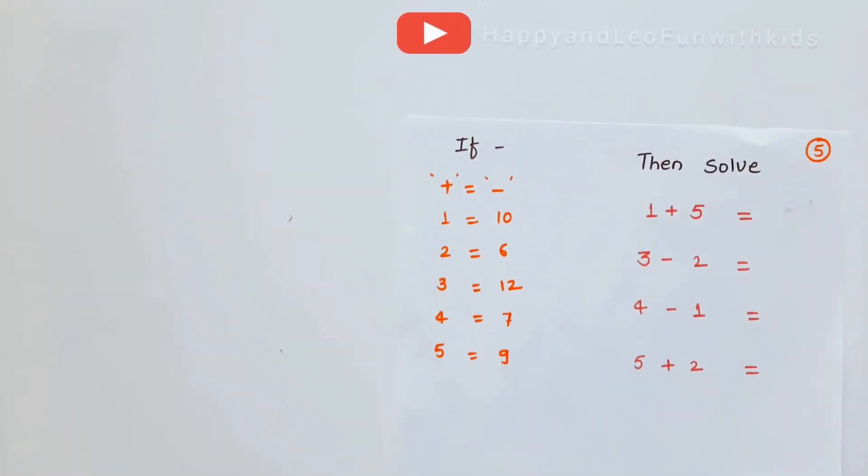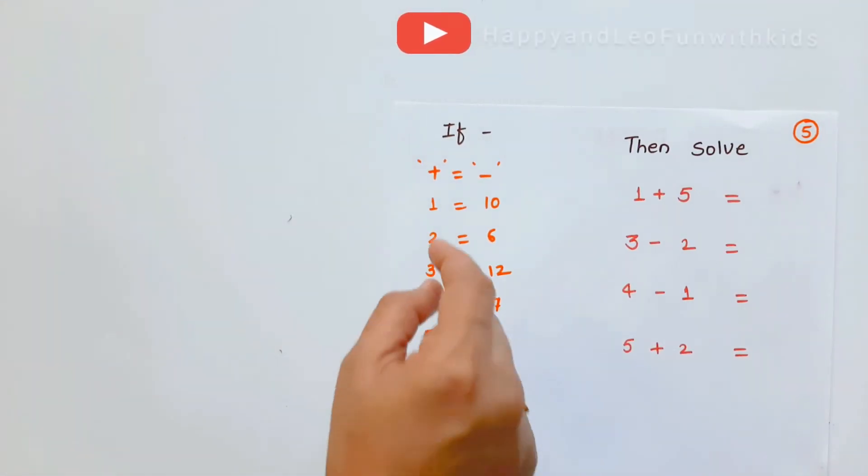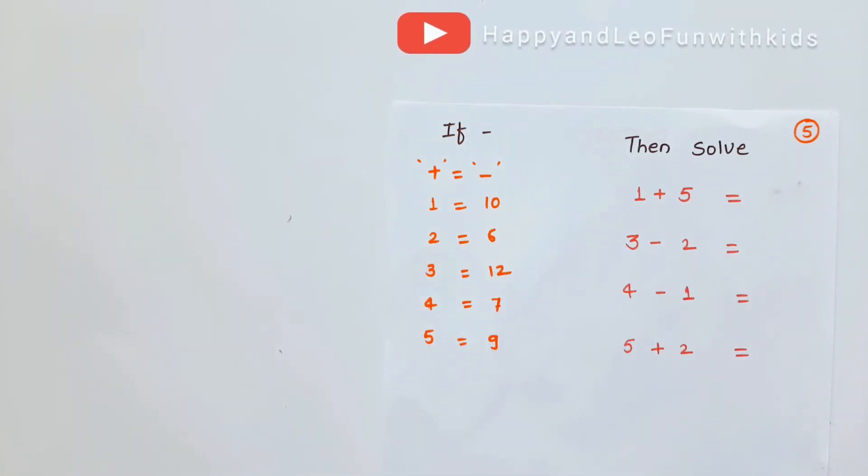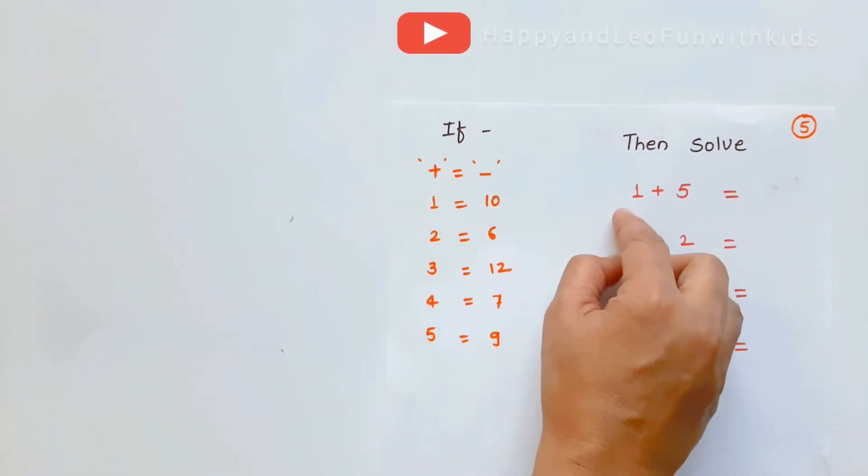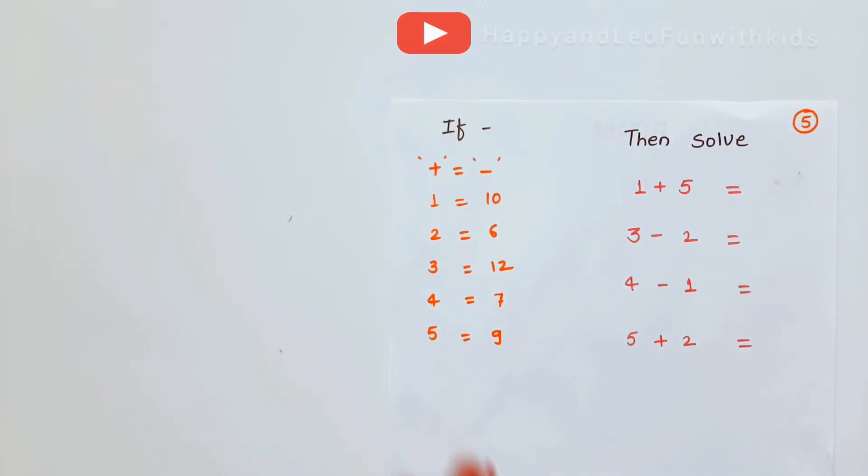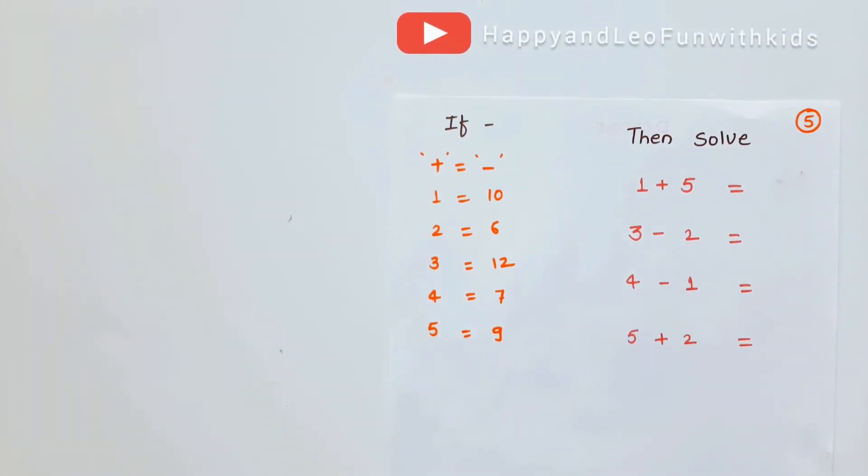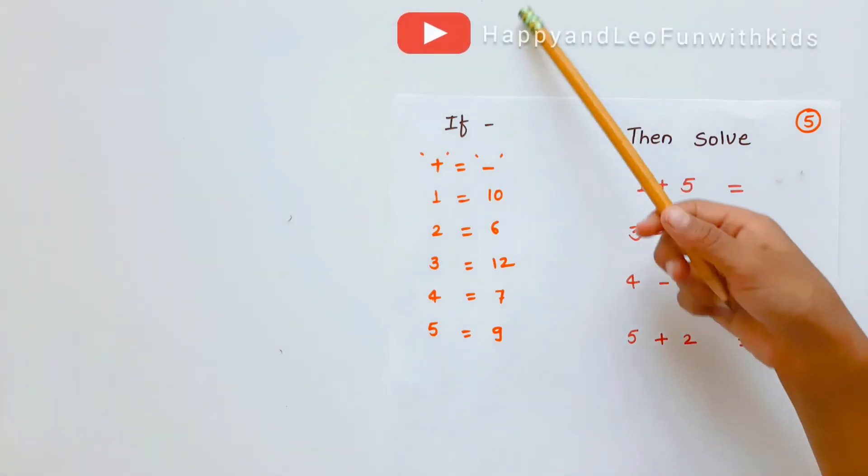Next is little complicated. Plus equals to minus. These numbers have different values. One equals ten. Two equals six. Three equals twelve. Likewise, then you have to solve this, like one plus five. What you have to write? One equals what? Ten. So you have to write here, one equals ten. Write down the ten below. And five equals nine. Write it down below the numbers. One equals ten.